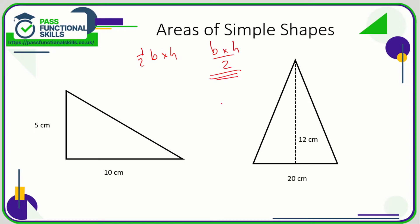So base is 10, the height is 5, so 10 times 5 is 50, 50 divided by 2 is 25.